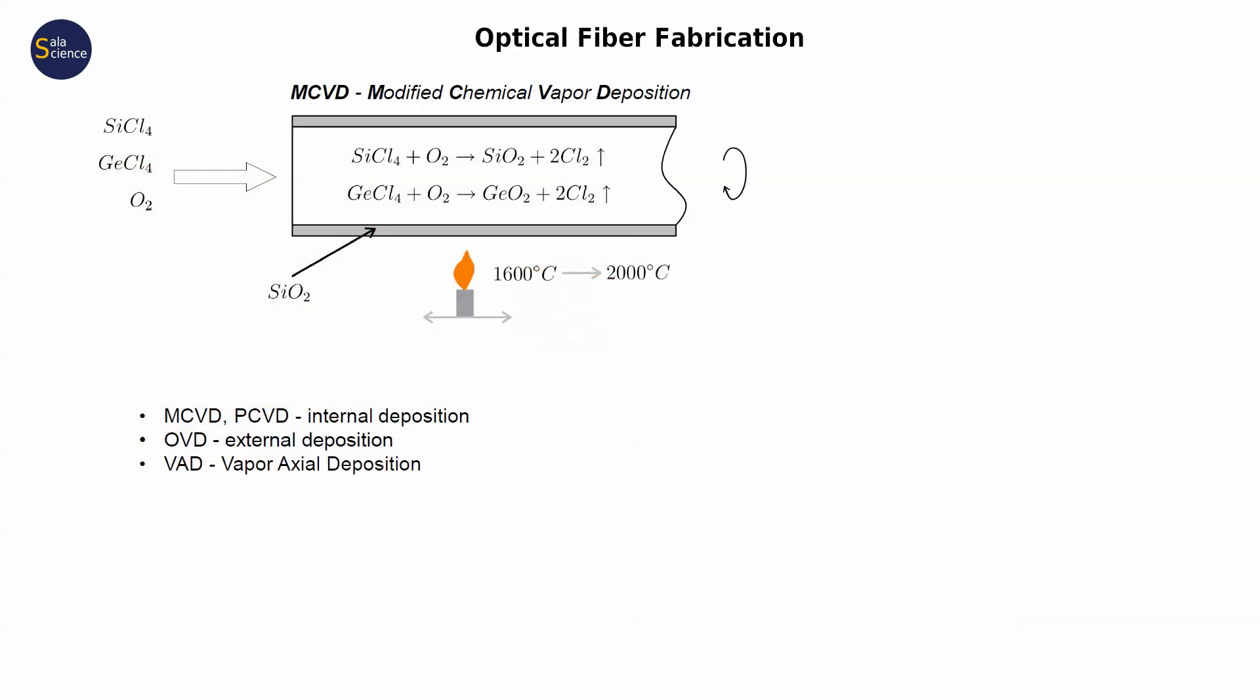How are such fibers made? Well, at first we have to make a preform. One of the common processes is called MCVD, Modified Chemical Vapor Deposition. We take a silica glass tube into which gases are introduced. Typically oxygen, silicon tetrachloride and germanium tetrachloride.